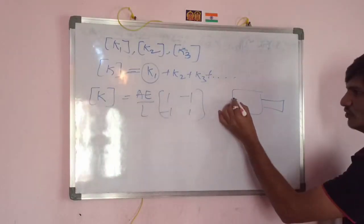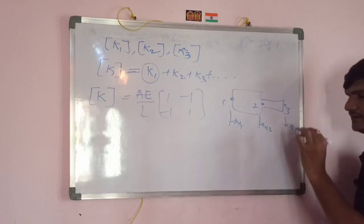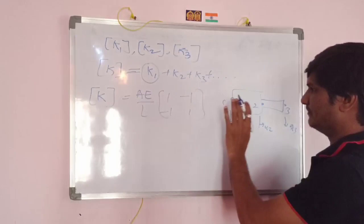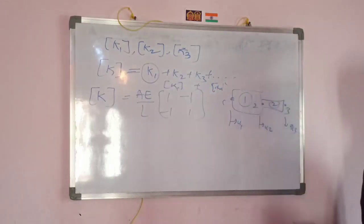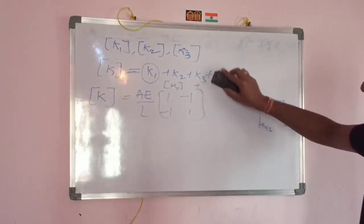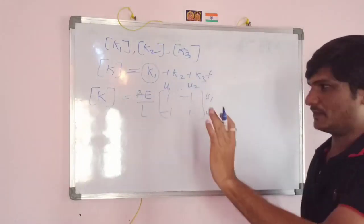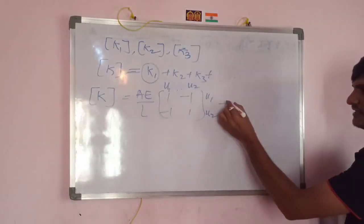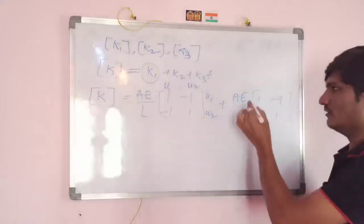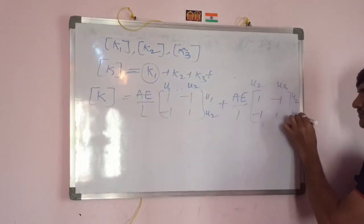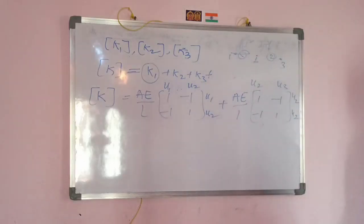For a bar element, there is a first bar and a second bar, with nodes 1, 2, and 3, and displacements u1, u2, u3 at each node. With two elements, you will have k1 plus k2 only. Element one connects nodes 1 to 2 with displacements u1, u2, and element two connects nodes 2 to 3 with displacements u2, u3. The stiffness matrix is AE/L times [1,-1; -1,1] for each element.